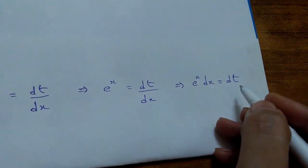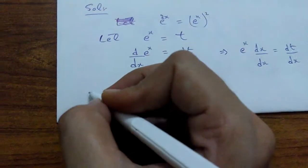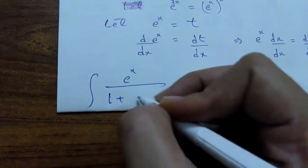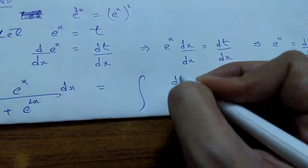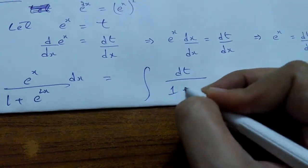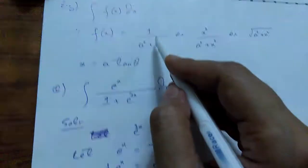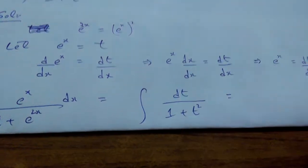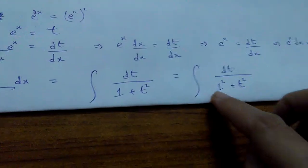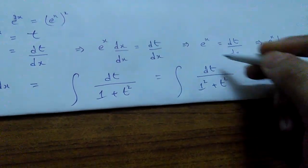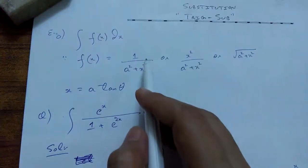So in place of e^x dx I'm going to put dt, and in place of e^x I'm going to put t. In this way, the integrand is rewritten: e^x dx is replaced by dt, and (e^x)^2 is written as t squared. Now it matches the Type 1 format — you can interpret 1 as 1 squared, so this is your a squared and t squared is your variable squared.